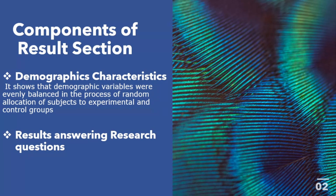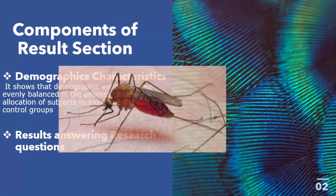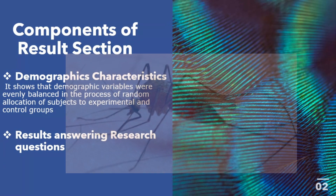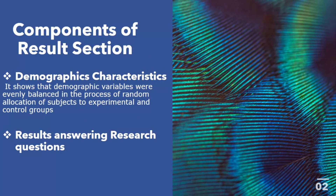The second component of your results section is answering your research questions or study objectives. Your results should be able to answer your study questions, which stem from your objectives. For example, if you want to know the prevalence of malaria in a particular population, your research question would be: what is the prevalence of malaria in that study population? Your results must answer that question.